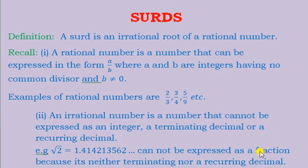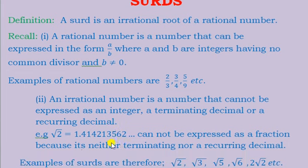It is also important to note what an irrational number is. An irrational number is a number that cannot be expressed as an integer, a terminating decimal, or a recurring decimal. For example, root two gives us 1.41421356... and so on. You realize that this value does not give us a terminating or a recurring decimal, so we cannot express it as a fraction.